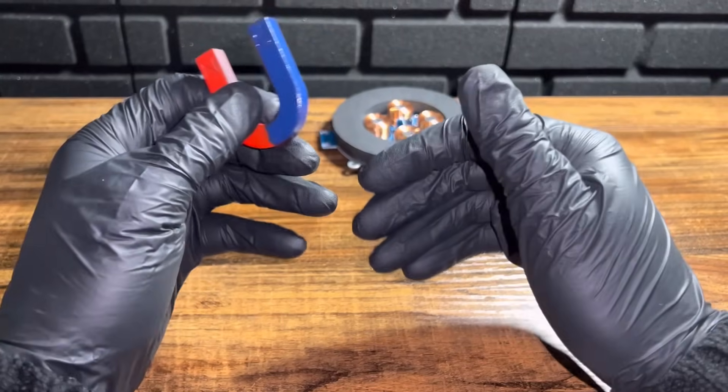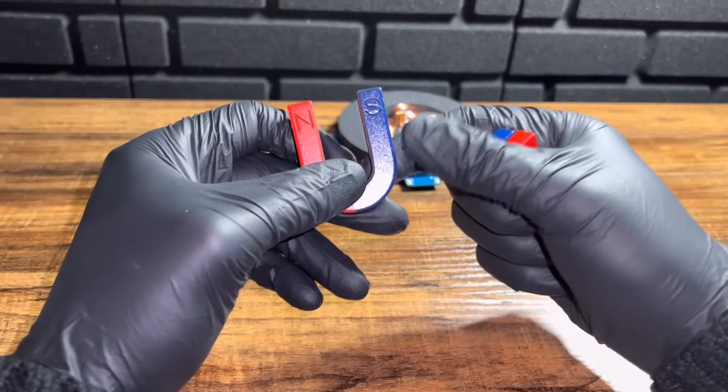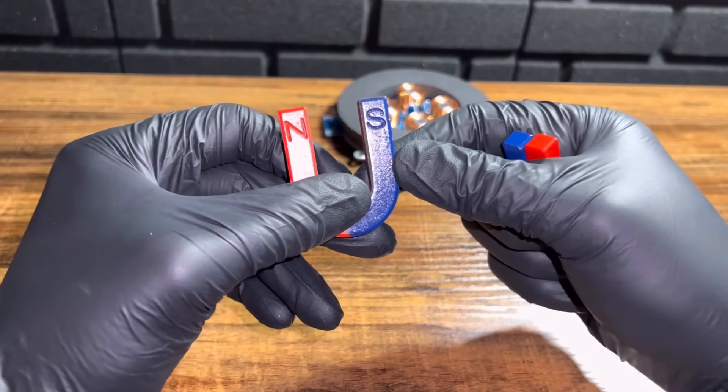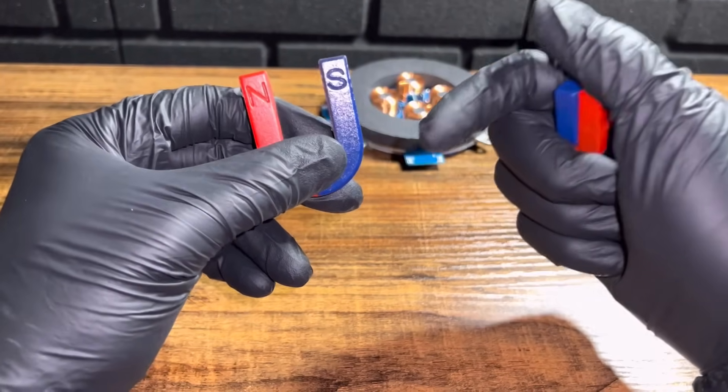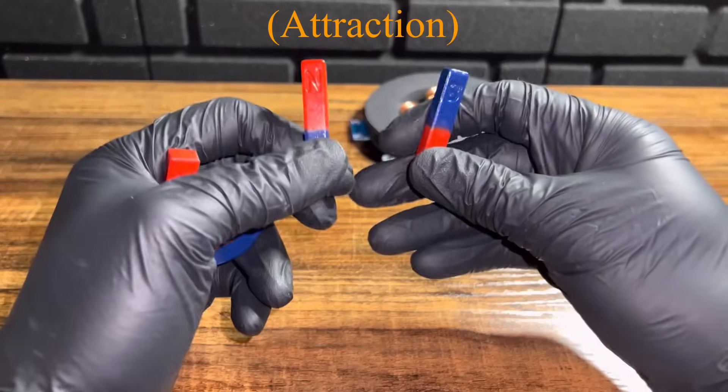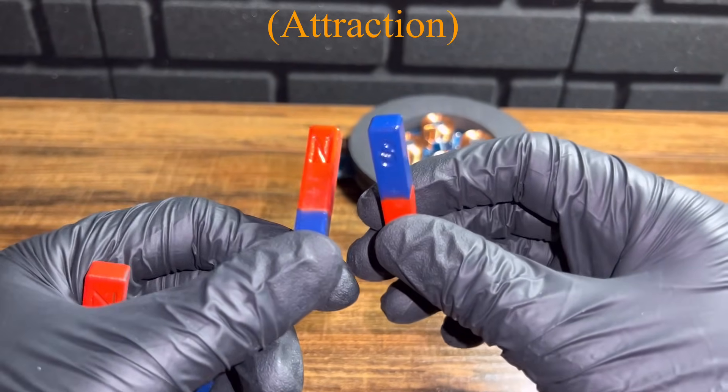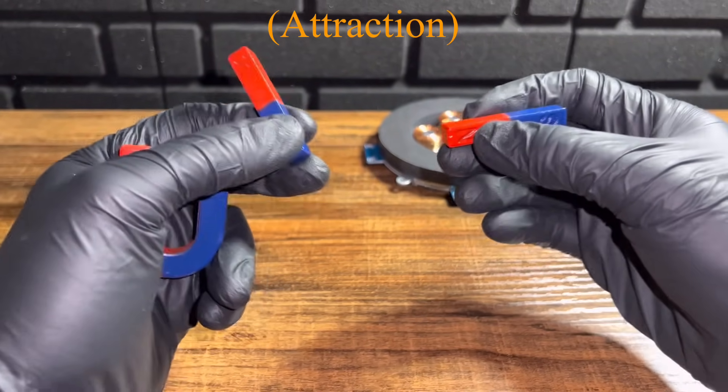The first thing you want to know about a magnet is that opposites attract. So as you can see here, every magnet has a north pole and a south pole. So we create attraction by placing a north pole with the opposite, a south pole. That's gonna create that attraction. And vice versa.